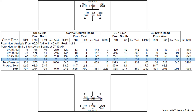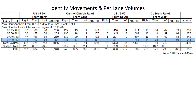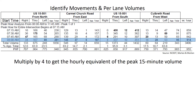The total volume in that peak 15-minute period is 914 vehicles. The first thing we're going to do is multiply each of these values by four to get the hourly equivalent for this peak 15-minute volume.